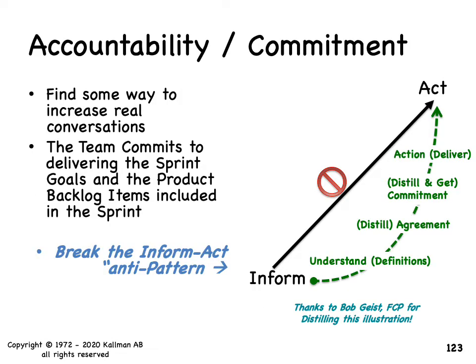A very elegant way that one of our agile coaches described how to use the 4D model in a slightly different way. In many organizations, executives will just inform the team members and their direct reports — they'll inform them and expect action. You really need to break this inform-act anti-pattern. It's something that works against you. They inform, they issue their edicts, and they expect action.